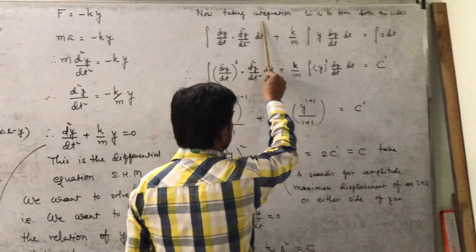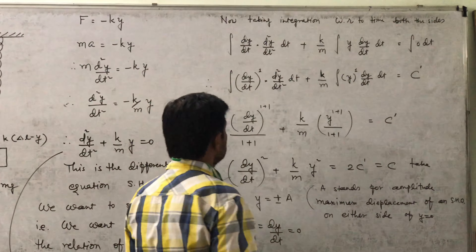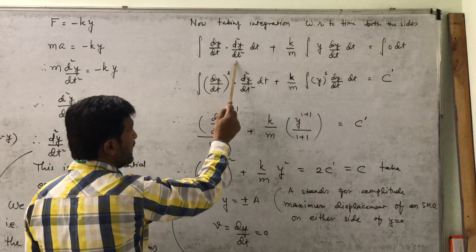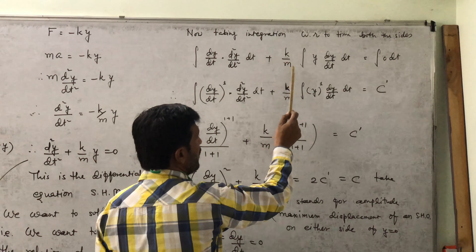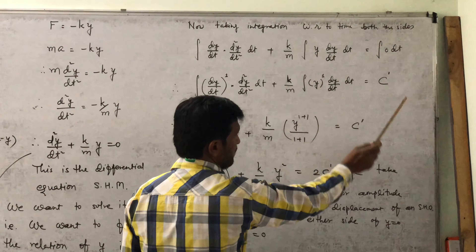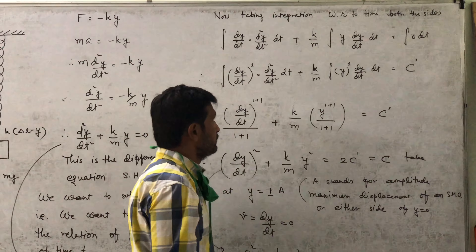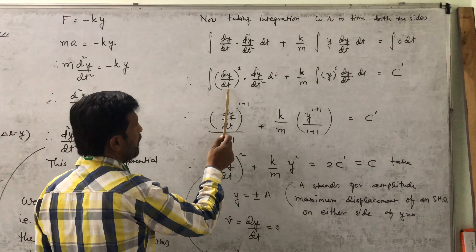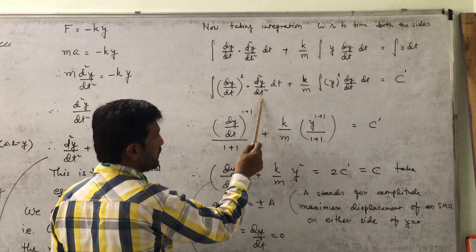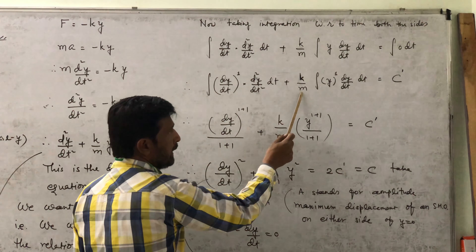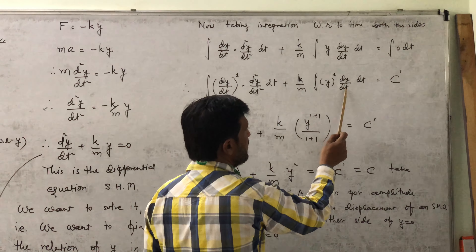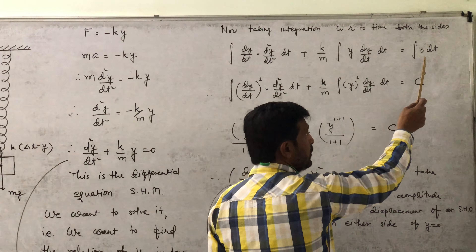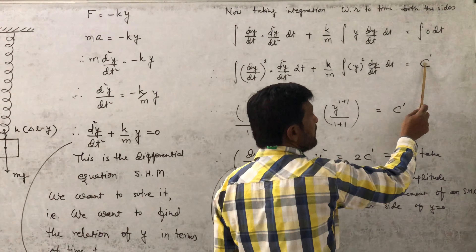Now taking integration on both sides: ∫(dy/dt)·(d²y/dt²) dt + (k/m)·∫y·(dy/dt) dt = ∫0 dt. We can rewrite this as ∫(dy/dt)^1·(d²y/dt²) dt + (k/m)·∫y^1·(dy/dt) dt = C′, a constant, since the derivative of a constant is zero and integration of zero is a constant.